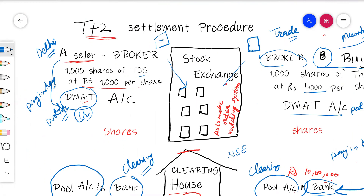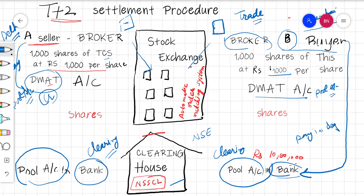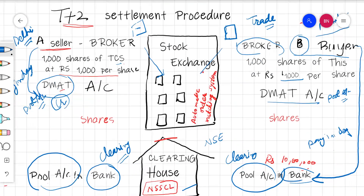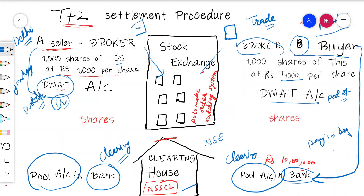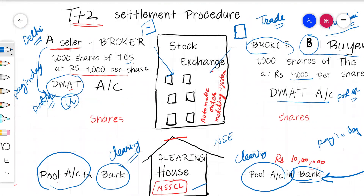On pay-in day: the buyer's bank account money is deducted and deposited into the broker's pool account, and the seller's DMAT account shares are debited and credited to the seller's broker's pool account.